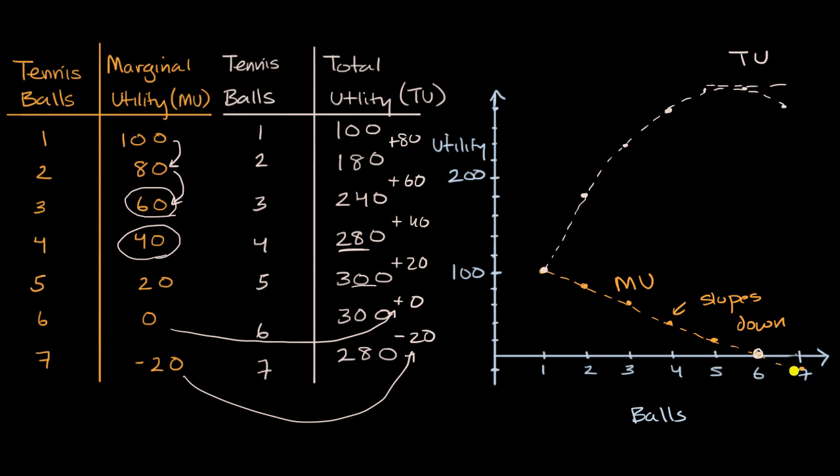Because beyond that point, where at least in this example, we had negative marginal utility. And so when you add that seventh unit, well, that's going to make your total utility curve go down. And so you're going to have a negative slope in this particular example.